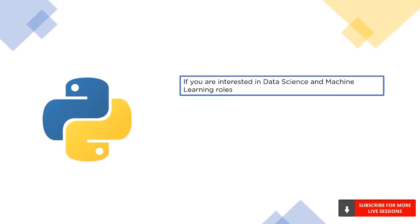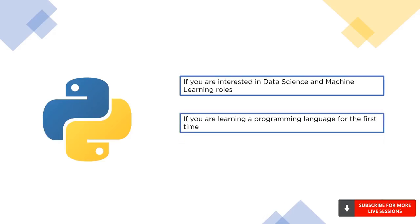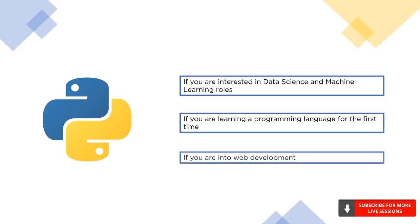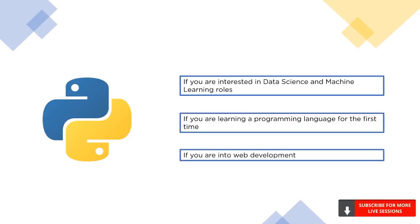On the other hand, if you're interested in artificial intelligence, data science, or the Internet of Things, Python is the go-to language for those technologies. Python is very simple to understand, so if you're learning to code for the very first time, go with Python. If you're interested in web development, Python is also a good choice as it provides excellent frameworks like Django and Flask to facilitate web development.